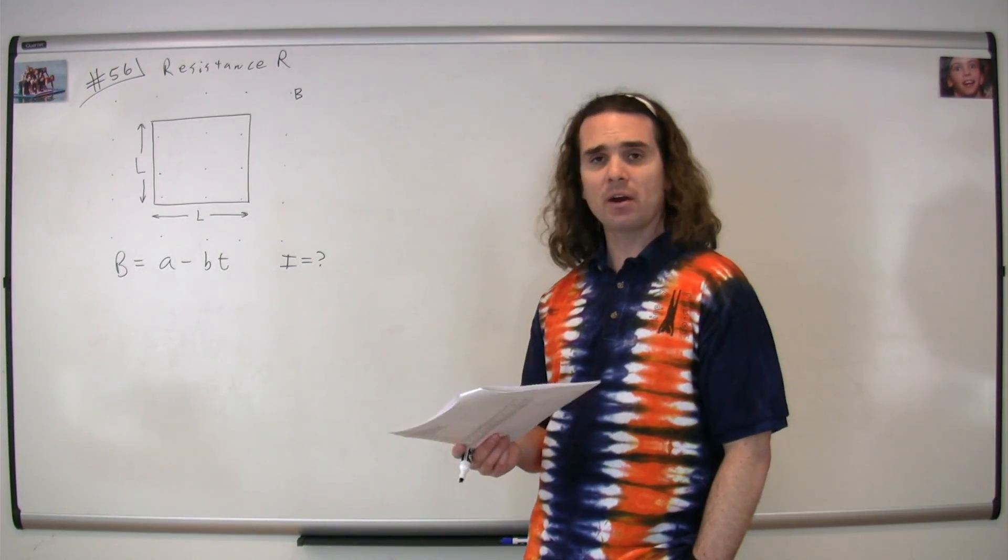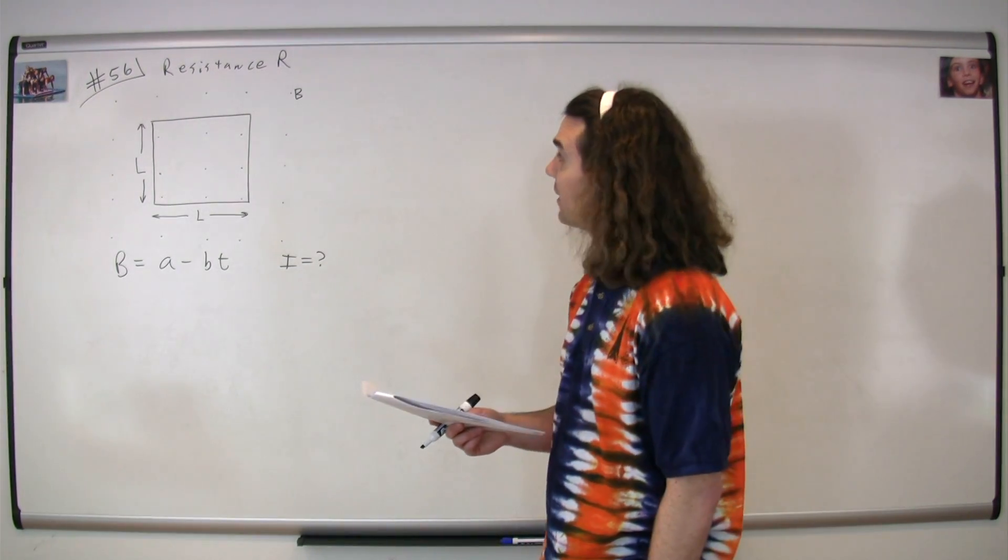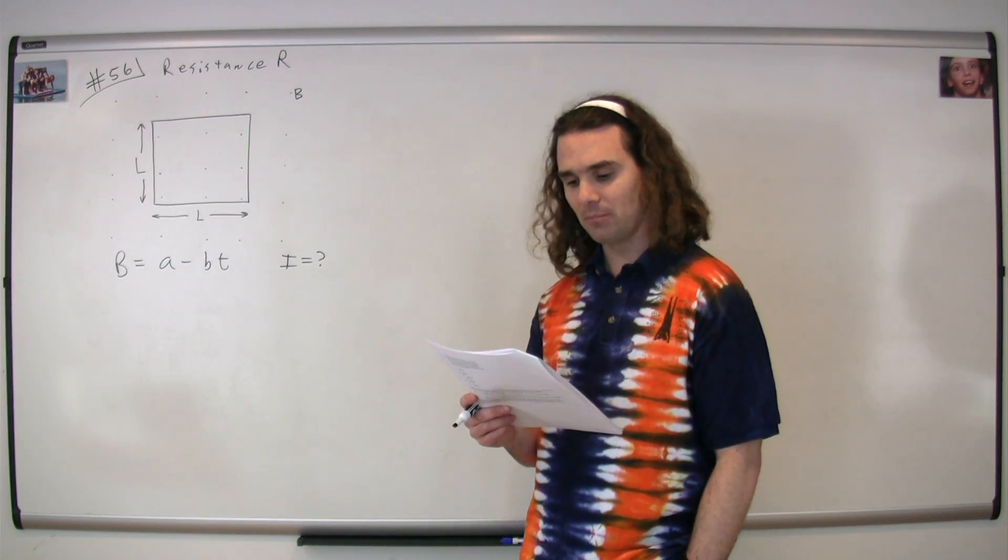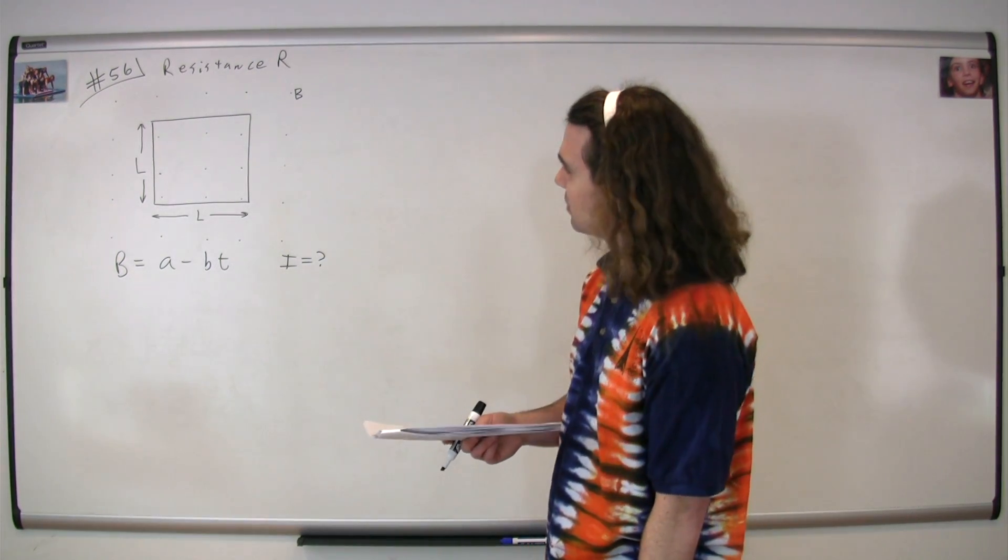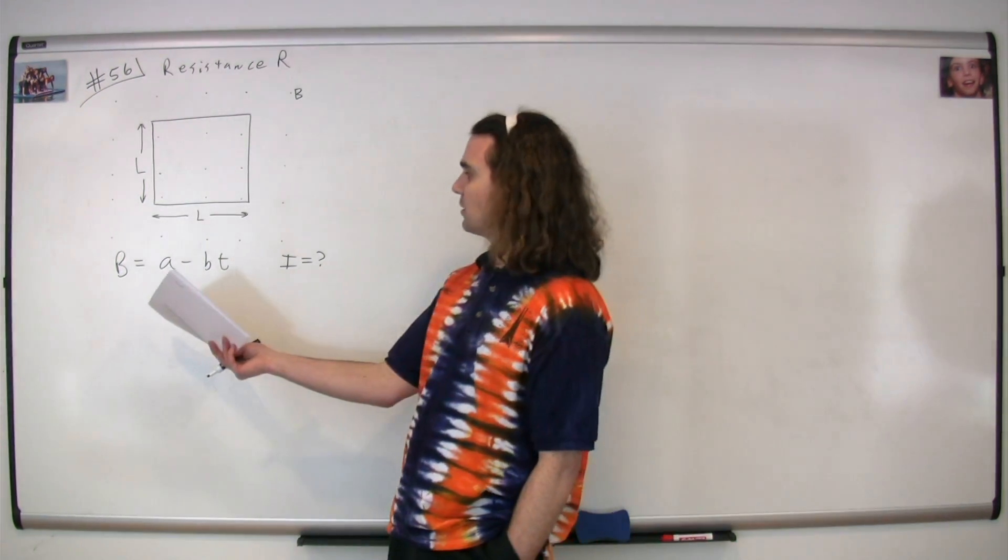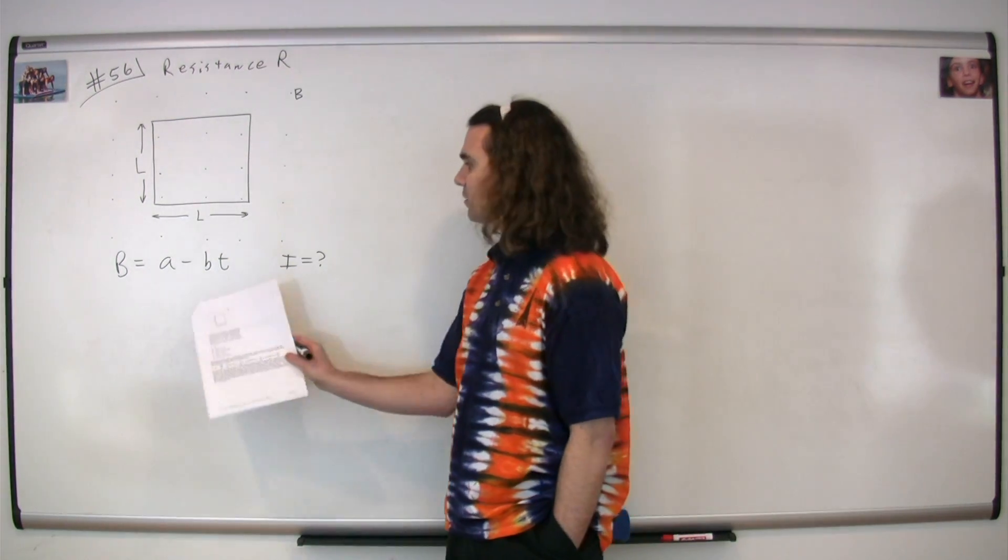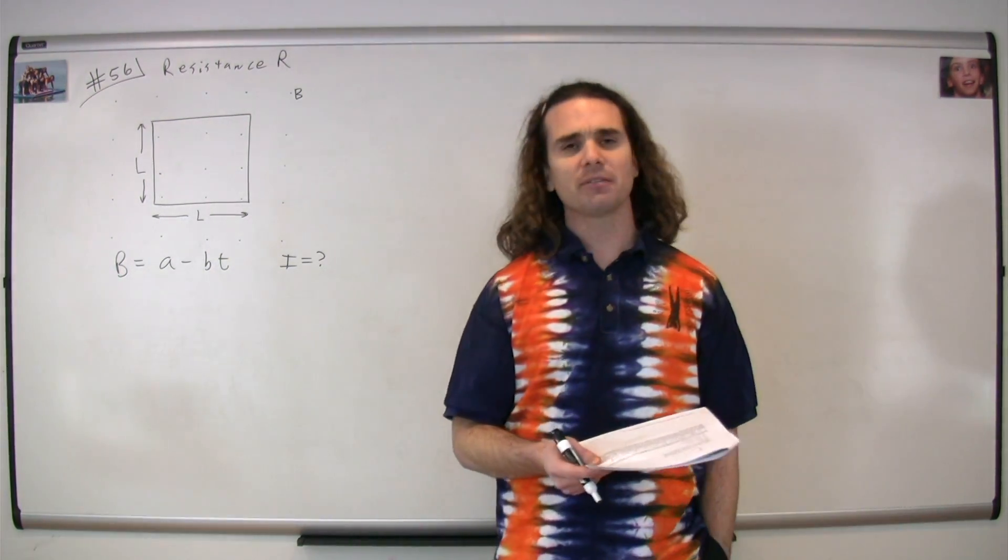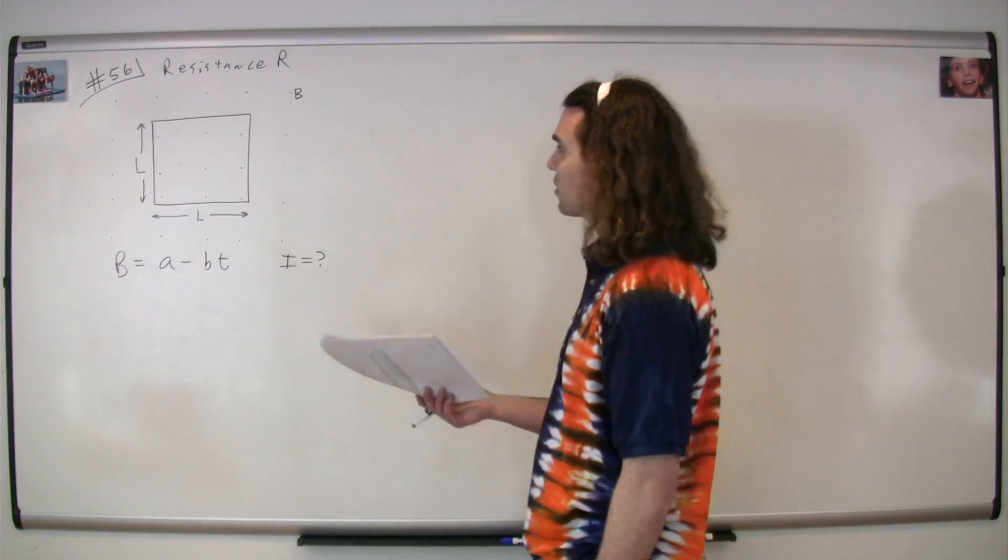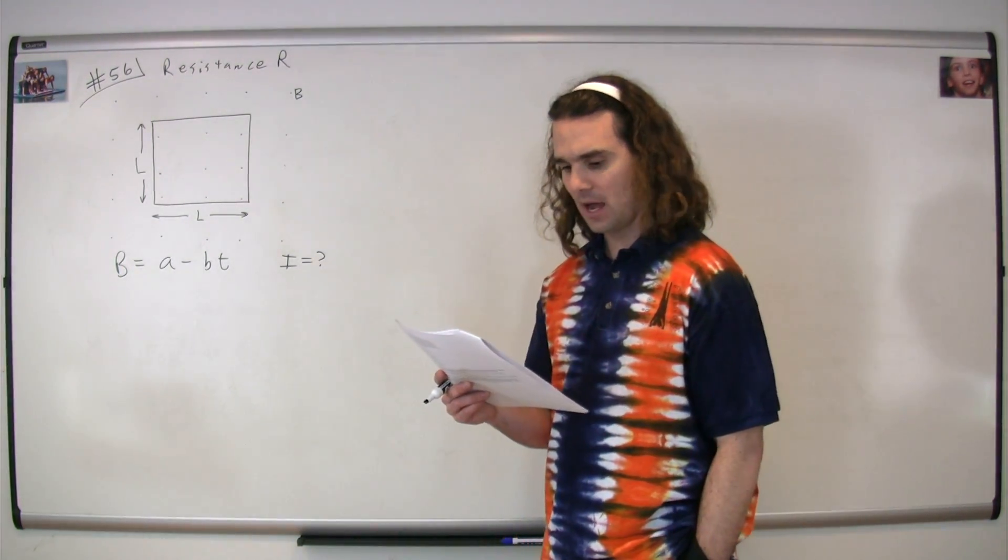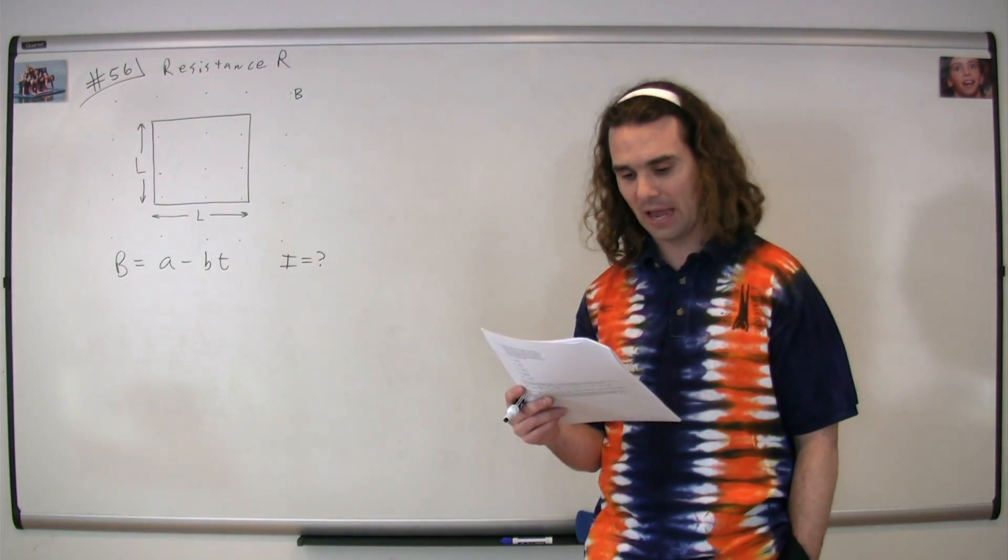Question 56, we have a square loop with sides capital L and resistance capital R in a uniform magnetic field capital B. That magnetic field is decreasing as a function of time where it equals a minus little b times t, where little a and little b are both constants. We're trying to figure out the induced current in this square loop as a function of time, and we're also trying to figure out its direction.